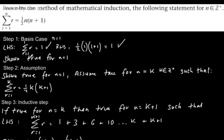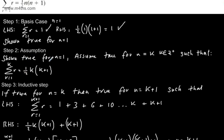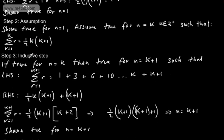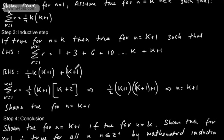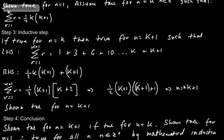So there are the four steps. Basis case: take a positive integer n, make it 1, sub it into the left-hand side and right-hand side, show they're equal — shown true for n equal to 1. Assumption: assume true for n equal to k, where k is a positive integer, and sub in. Inductive step: if true for n equal to k, then true for n equal to k plus 1 — show the left-hand side, sub in values, show the right-hand side with the new term, factor it, and show n equal to k plus 1. Conclusion: shown true for n equal to k plus 1 if true for n equal to k, shown true for n equal to 1, therefore true for all positive integers n by mathematical induction.